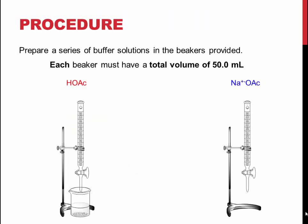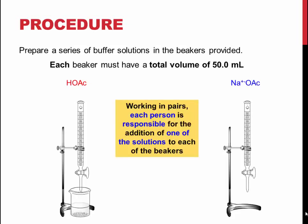Several buffer solutions need to be prepared using very precise volumes. Follow the table in your lab manual to add the correct amount of each solution, and use a burette to deliver the correct volume of each solution. The final volume of each solution needs to be exactly 50 ml. You and your partner should each be responsible for the addition of one of the solutions to the beaker using two separate burettes.